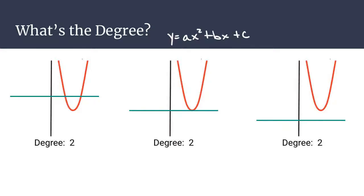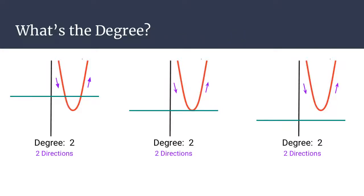We also mentioned another way to define the degree and visualize it is that you could look at the number of directions that the graph travels. We see that for each of these, the graph travels in two separate directions. No matter where that x-axis is or how the parabola is placed with respect to that x-axis, there's always two directions of that graph.